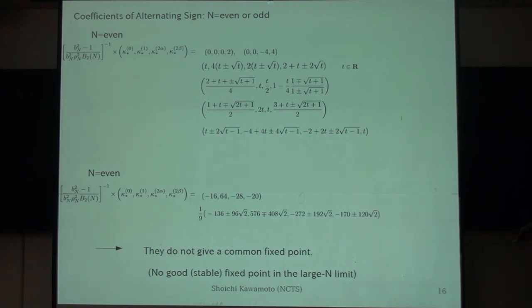So, actually, there are many fixed points found. For an even case, this one, the odd case, and that one. But, unfortunately, they are not really the same as each other. Which means that there is no common fixed point for even and odd case. That means that neither of them is actually a stable fixed point when you go to N to infinity.